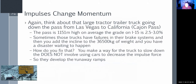Think about a large tractor-trailer truck going down the pass from Las Vegas to California — about 1,151 meters high, with a grade of about 2 to 3 percent on I-15. Now add a semi truck: 36,000 kilograms coming down that grade — that can add up to some serious speed. And then what happens if the brake system fails?